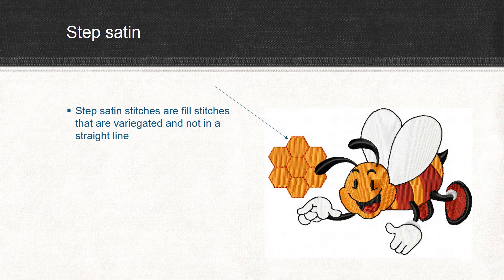Step satin stitches are filled stitches that are variegated — they're not in a straight line. If you look at the honeycomb with this little bee, you can see some step satin stitches, which give a little texture to the design. There are many step stitches to choose from for fills, so experiment with the different ones and see what kinds of textures and interest you can create in your digitized designs.